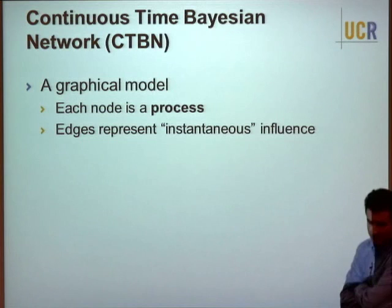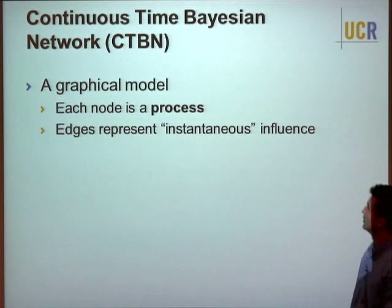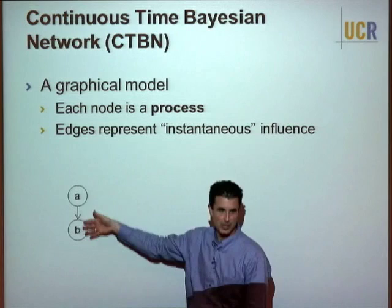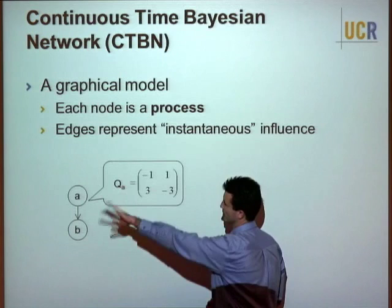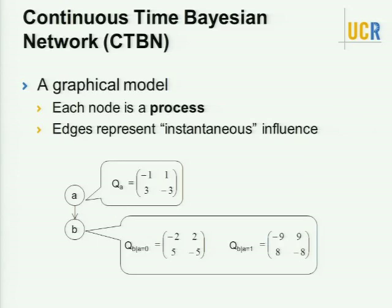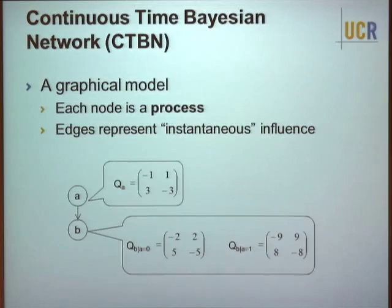A CTBN is built on the graphical model framework. Each node is a whole process, not just a random variable. Edges represent instantaneous influence. In the simplest case: process A proceeds without caring about anything else, and process B depends on A. Process A has a single rate matrix. Process B has two rate matrices — one for when A is in state 0, and one for when A is in state 1. At any given instant, B's rates of change are governed by the instantaneous state of A.